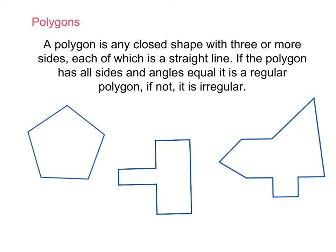So guys, we've had a look so far at triangles and at quadrilaterals, and now we're going to look at polygons. You may have gathered from this definition that triangles and quadrilaterals both classify as polygons because they are a closed shape — meaning there are no openings. They're not like an arc or a semicircle. They're a closed shape with three or more sides, each of which is a straight line, so they count as polygons.